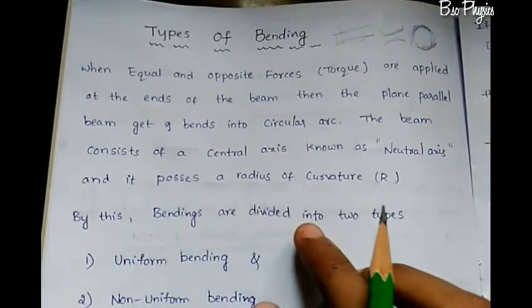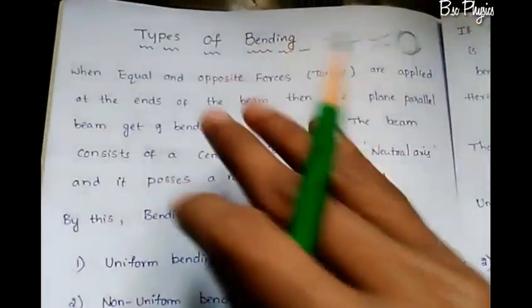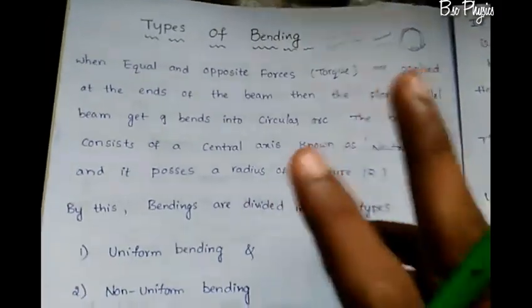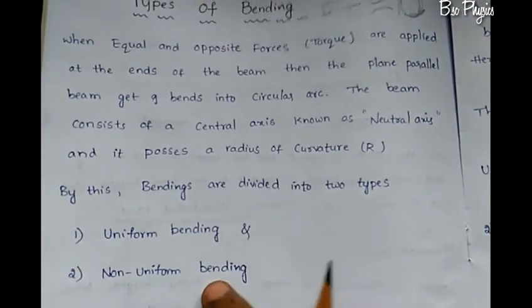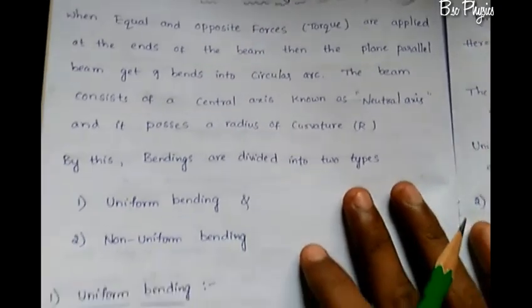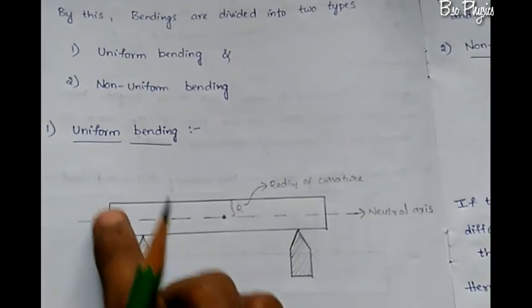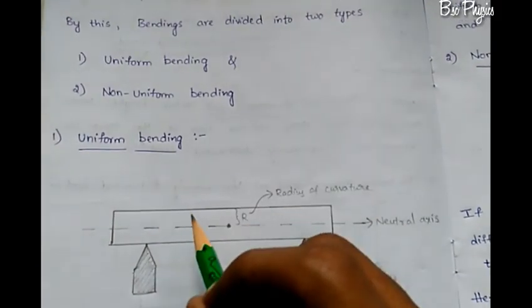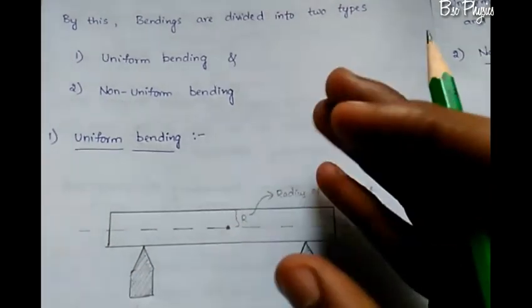By this, bending is divided into two types. The first type is uniform bending, and the second is non-uniform bending. If you are going to do the experiment, you will encounter both uniform bending and non-uniform bending.